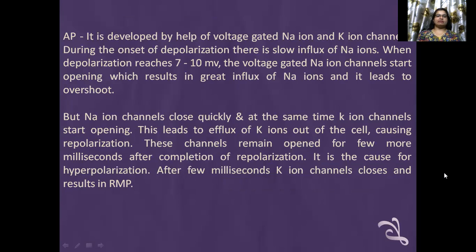Action potential is developed with the help of voltage-gated sodium ion and potassium ion channels. During the onset of depolarization, there is slow influx of sodium ions. When depolarization reaches 7 to 10 mV, the voltage-gated sodium ion channels open, resulting in a great influx of sodium ions, leading to overshoot. Sodium ion channels close quickly and at the same time, potassium ion channels start opening. This leads to efflux of potassium ions out of the cell, causing repolarization. These channels remain open for a few more milliseconds after completion of repolarization, which is the cause for hyperpolarization. After a few milliseconds, potassium ion channels close and resting membrane potential is restored.